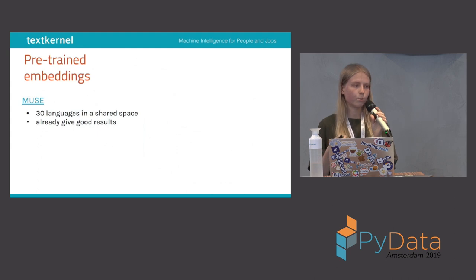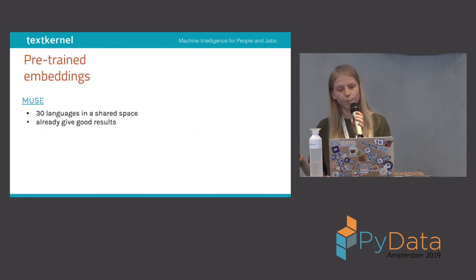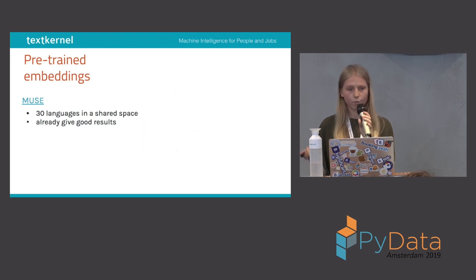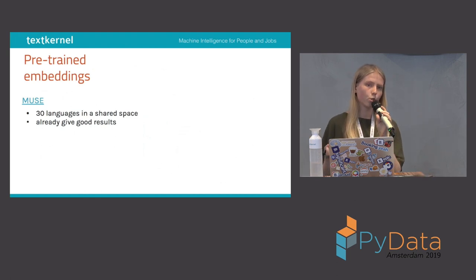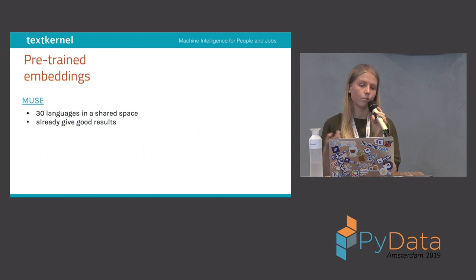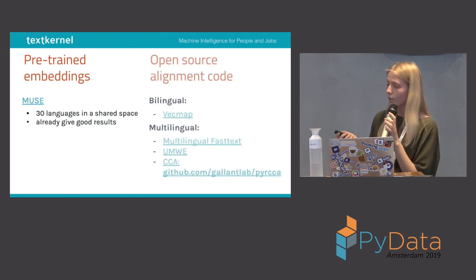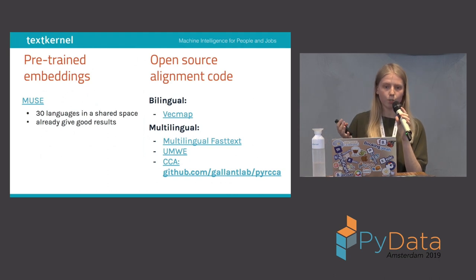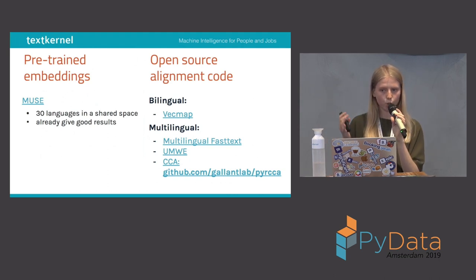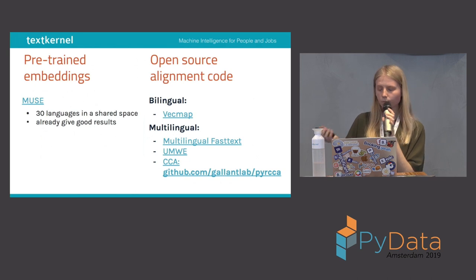The problem with using pre-trained embeddings is that they are normally trained on generic data — news articles or Wikipedia — so they might not work for your domain specifically. They also might not have the specific language pair you need, for example Russian to Slovene. What you can do instead is use open-source alignment code: you first train monolingual embeddings separately for all the languages you want using your domain data, and then use the alignment code to map everything into the same space.